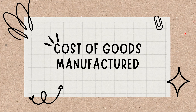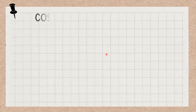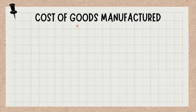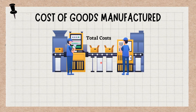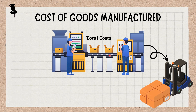What is the Cost of Goods Manufactured? The Cost of Goods Manufactured is the calculation of a company's total costs of production during a specific time period. It's also the total amount a company spends to produce goods, turn them into inventory and put them up for sale.